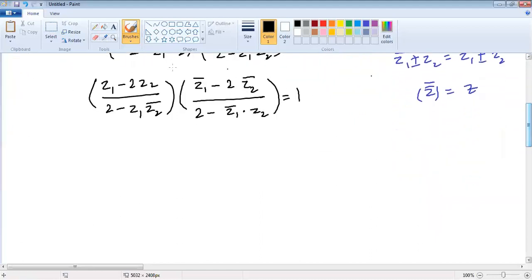I am going to multiply numerator and denominator doing cross-multiplication. So it becomes (Z1 minus 2Z2) into (Z1 bar minus 2Z2 bar) equals (2 minus Z1 Z2 bar) into (2 minus Z1 bar Z2).